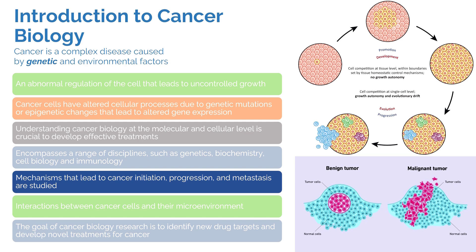Cancer is specifically an abnormal regulation of the cell that can eventually lead to uncontrolled growth. Any uncontrolled growth of any cell or tissue can become cancerous if it is not controlled. A single cell has a proper lifespan it must govern by, and if it does not stay true to those mechanisms, it leads to uncontrolled growth and the cell becomes cancerous, continuing to divide into multiple cancer cells that eventually form a tumor.